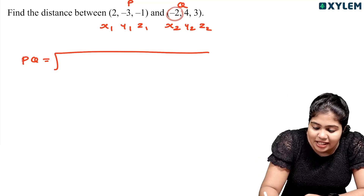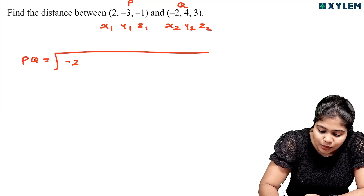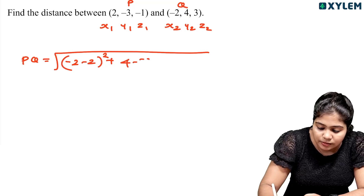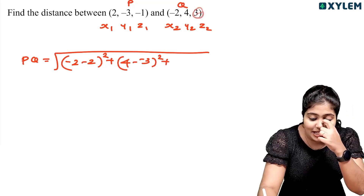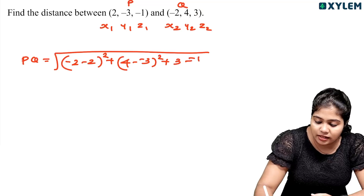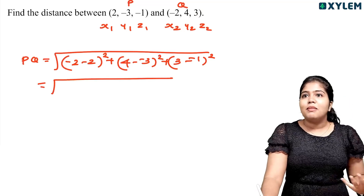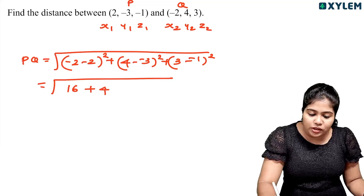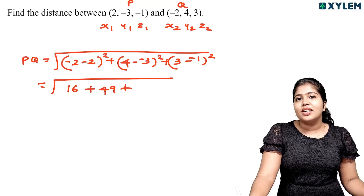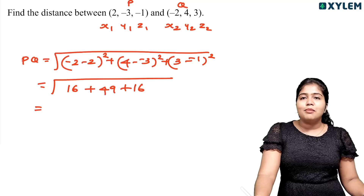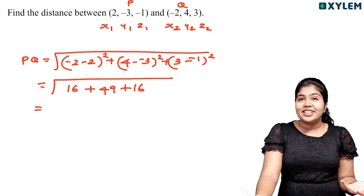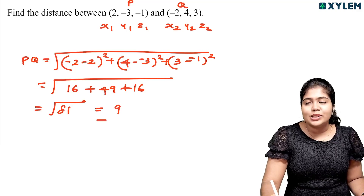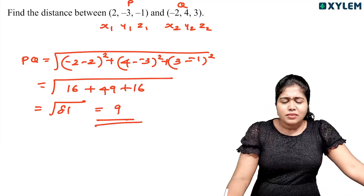So x2−x1 = 2−1 = 1, (1)² = 1. y2−y1 = 4−2 = 2, (2)² = 4. z2−z1 = 3−3 = 0, (0)² = 0. Root of 1 + 4 + 0... working through: root of 81 is equal to 9, and we get the answer.